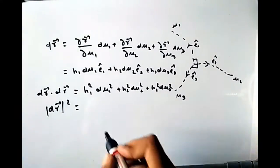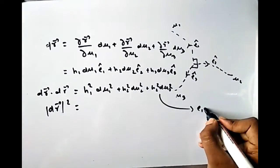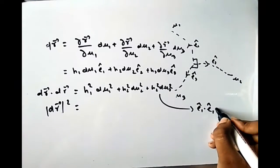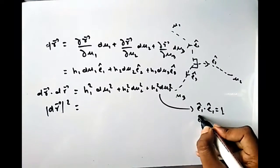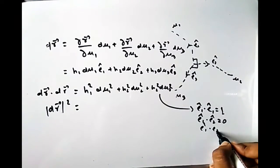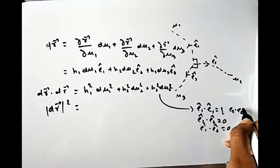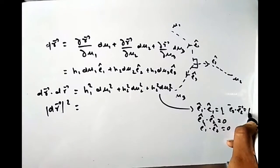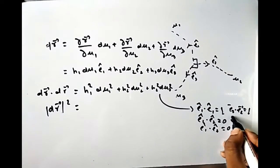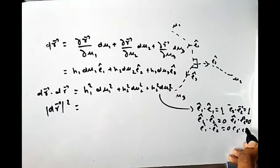The magnitude squared of dr is dr·dr = h₁² du₁² + h₂² du₂² + h₃² du₃², because the basis vectors are orthogonal so cross terms vanish in the dot product.